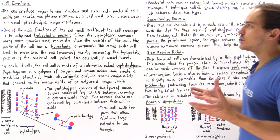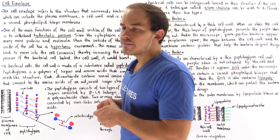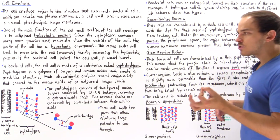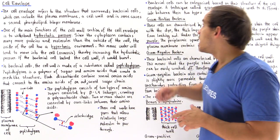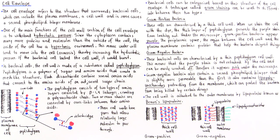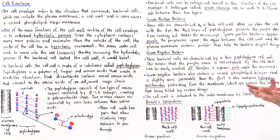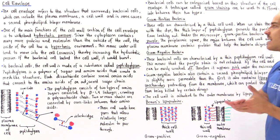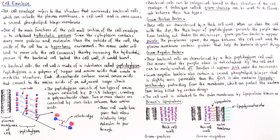Earlier I mentioned that there are two different types of bacterial cells. Bacterial cells are categorized based on their cell envelope structure, and we use a technique called gram staining to differentiate between them. We have gram positive bacteria and gram negative bacteria.